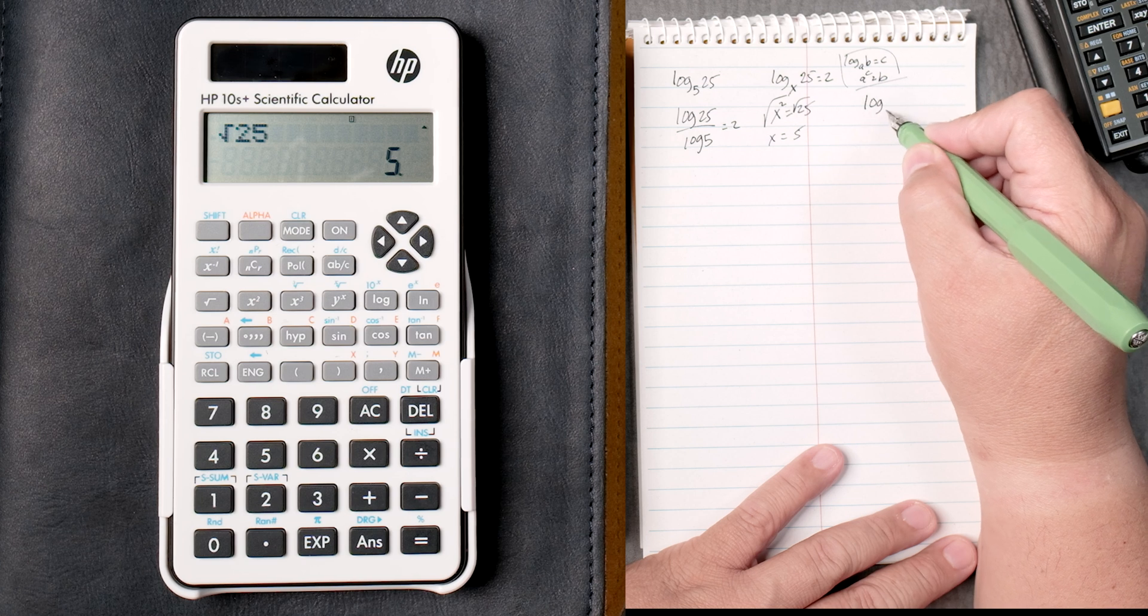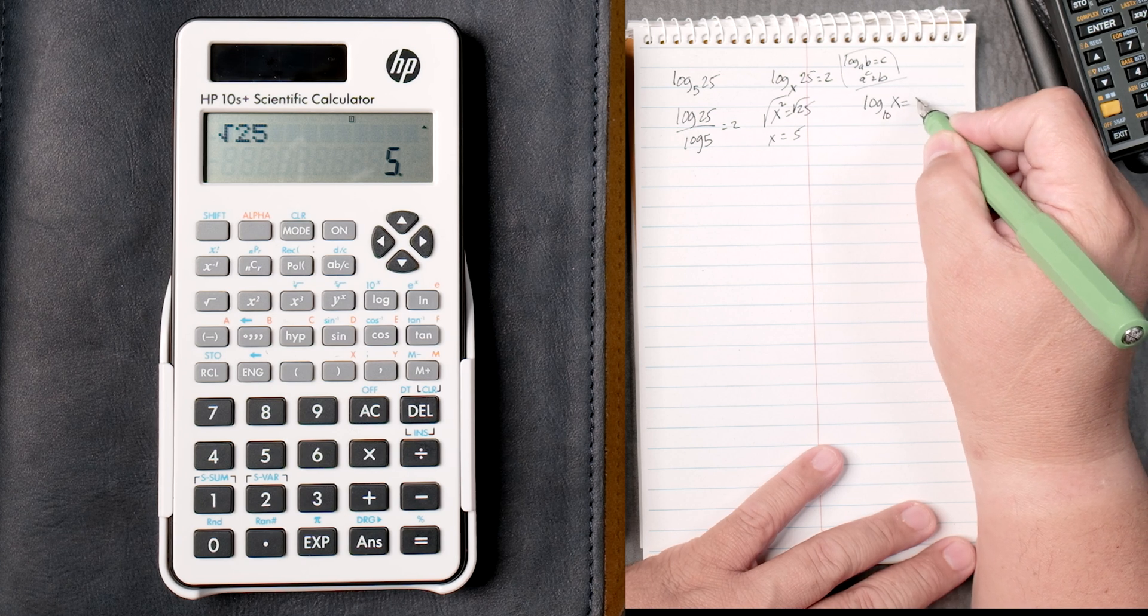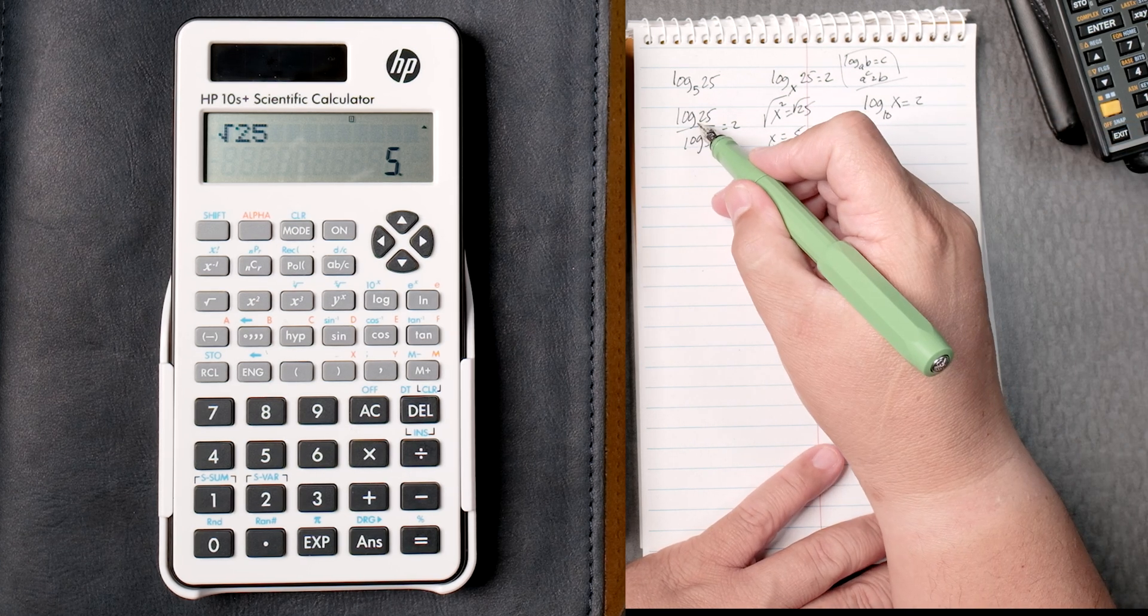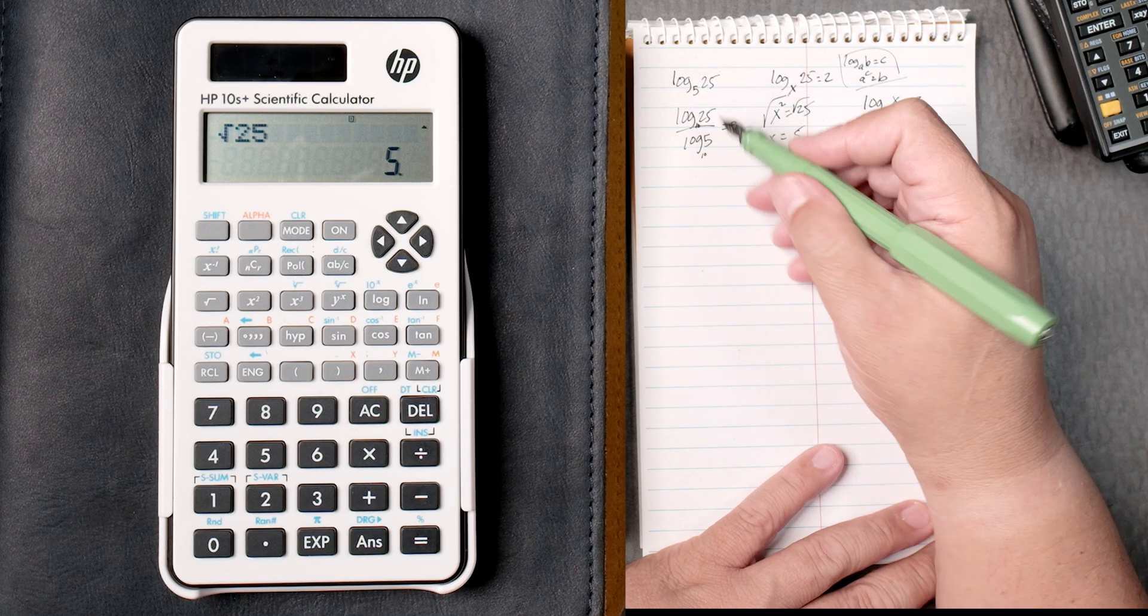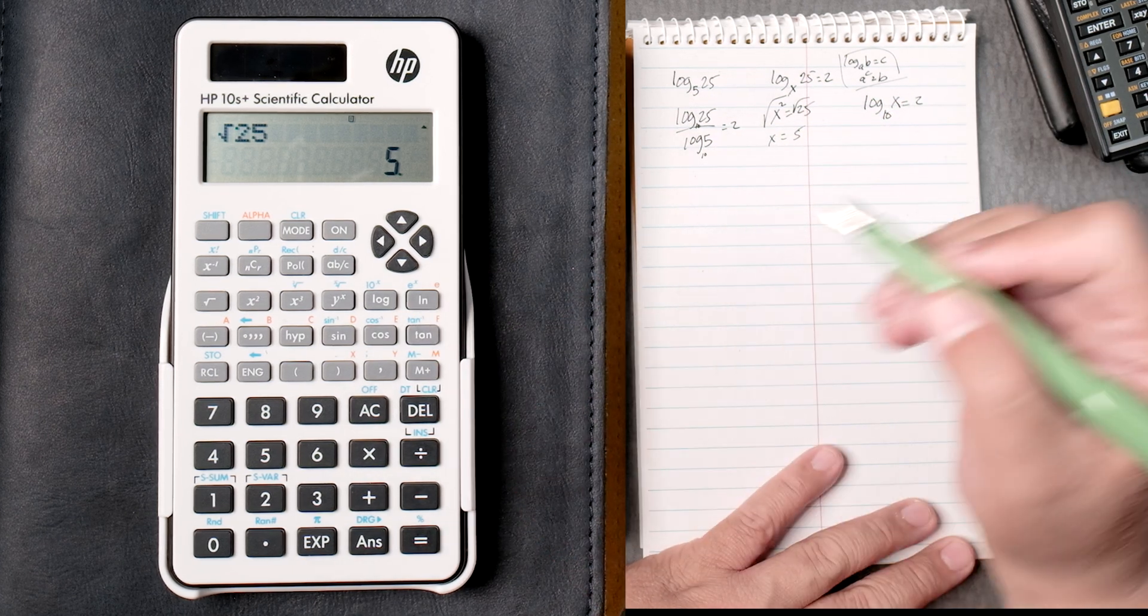Then the log of base 10, x equals 2. By the way, these are all base 10s. We don't show it when we write it. And this log is also base 10.